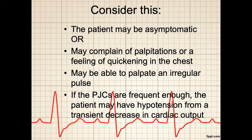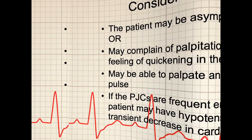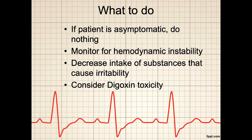As you assess your patient, they may be asymptomatic or may complain of palpitations or a feeling of quickening in the chest. As a nurse, you may be able to palpate an irregular pulse. If PJCs are frequent enough, the patient may have hypotension from a transient decrease in cardiac output. If the patient has no symptoms, continue to monitor and provide no interventions. Monitor for hemodynamic instability, decrease intake of substances that cause irritability, and consider digoxin toxicity.